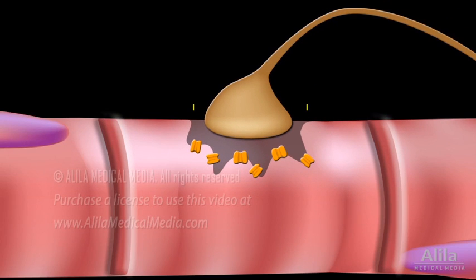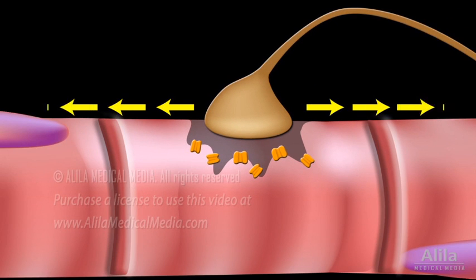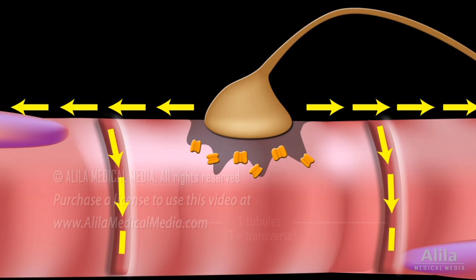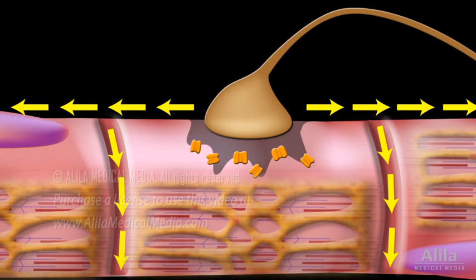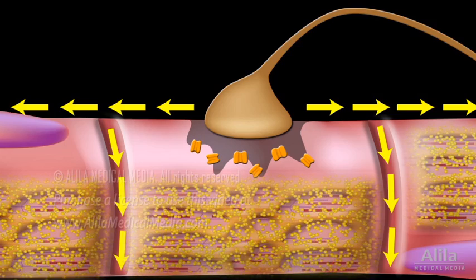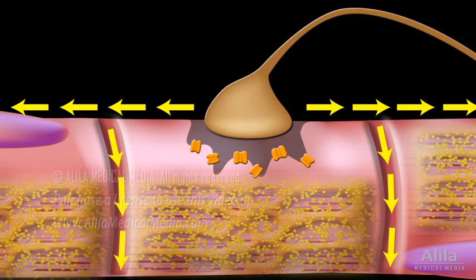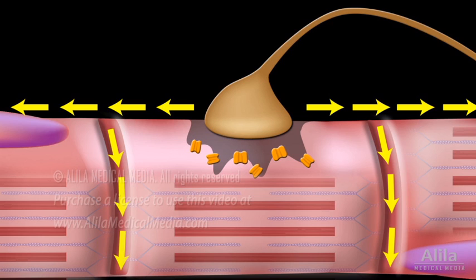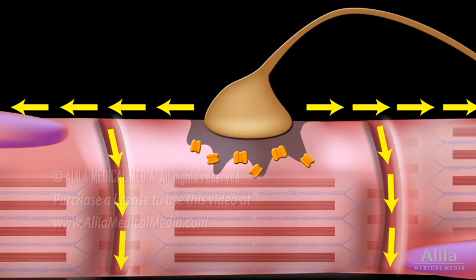Once generated, the action potential spreads like a wave, thanks to similar voltage-gated ion channels located throughout the muscle fiber. The action potential also runs deep into the fiber via T-tubules to reach the sarcoplasmic reticulum. Here, it activates voltage-gated calcium channels, releasing calcium from the sarcoplasmic reticulum into the cytosol of muscle cells. Calcium then sets off muscle contraction by the sliding filament mechanism.